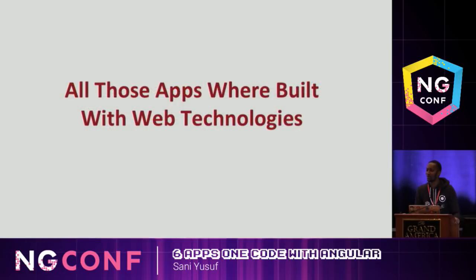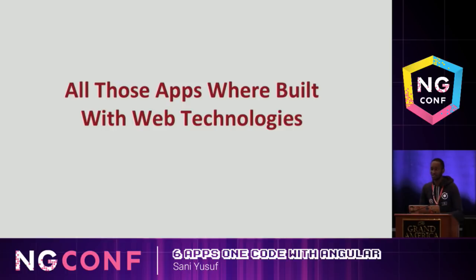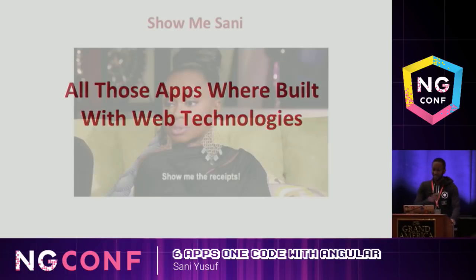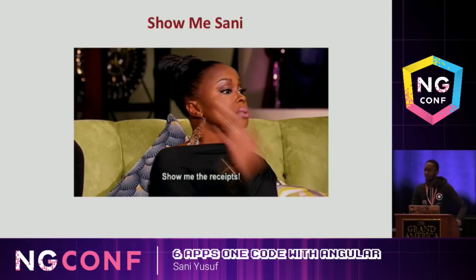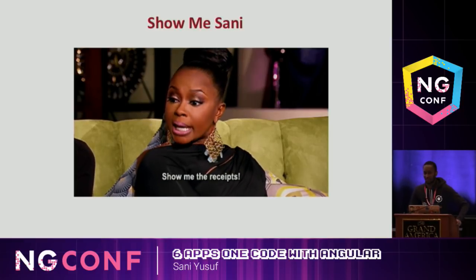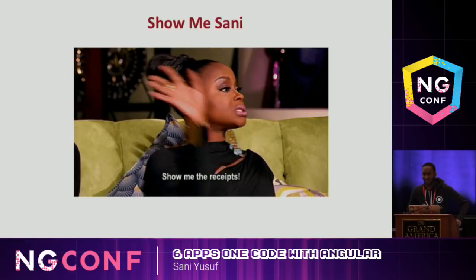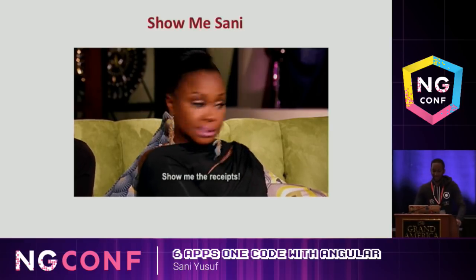The correct answer is all of them are actually built with web technologies. So if you voted for that, you have just won a prize. I said I'm giving out Teslas - pictures of Teslas, I meant. So congratulations, you won yourself a picture of a Tesla.